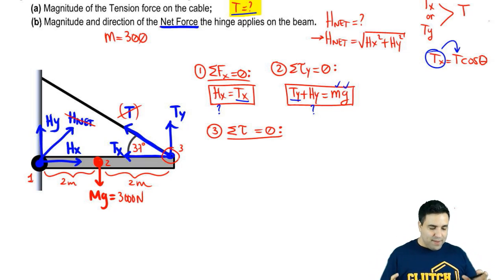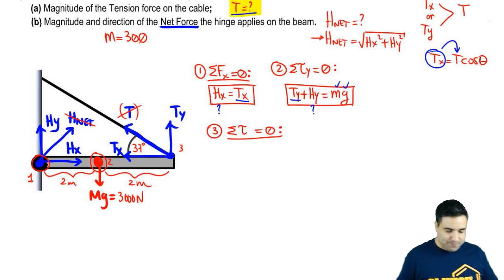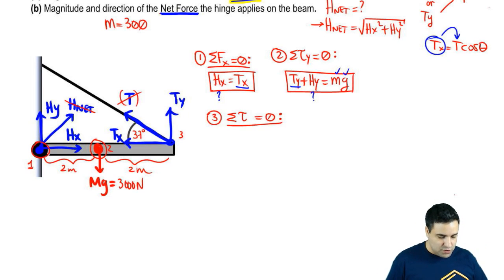Remember, you always want to write the sum of all torques equals zero equation at a point where there's a force. That's why it's either one, two, or three. You want to write it at a point where the force you're looking for is not at. So I don't want to write at this point. This is a bad point. I want to write it at one or two. And here, one of the two is actually better than the other. Point one is the best point because there are two forces, which is Hy and Hx. And if I write it here, I will have fewer torques. So point one is the best point to write.